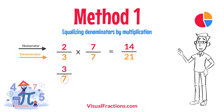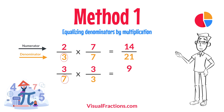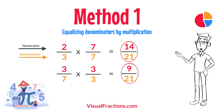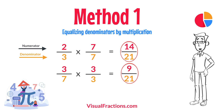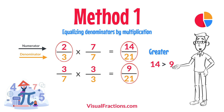For three-sevenths, multiply both the numerator and the denominator by 3, the denominator of two-thirds. This results in nine twenty-firsts. Now, with both fractions expressed with a denominator of 21, we can easily compare them. Comparing these, 14 twenty-firsts is greater than 9 twenty-firsts, so two-thirds is the larger fraction.